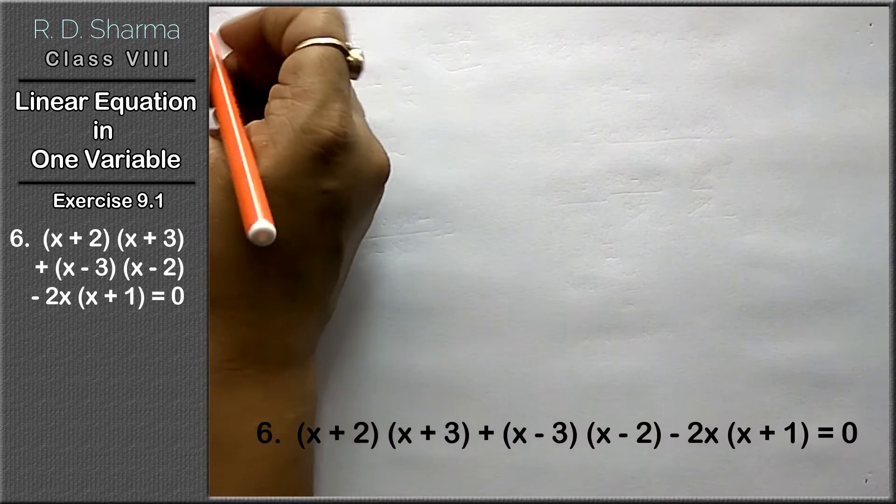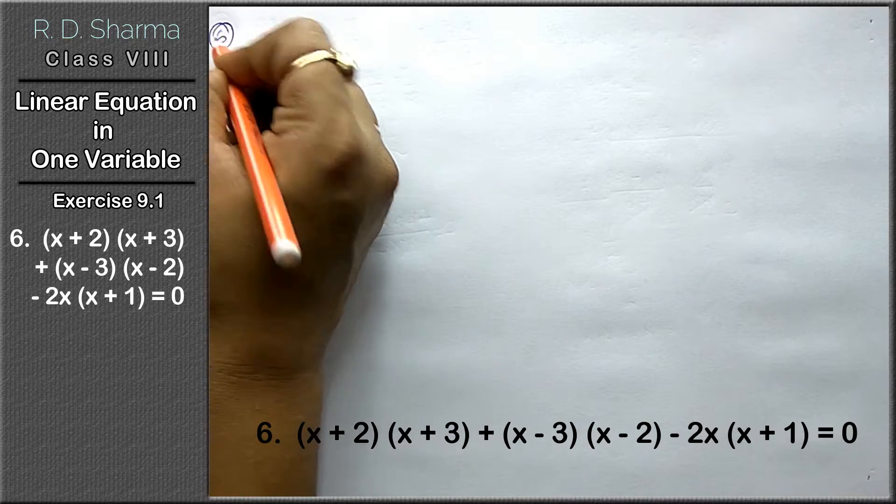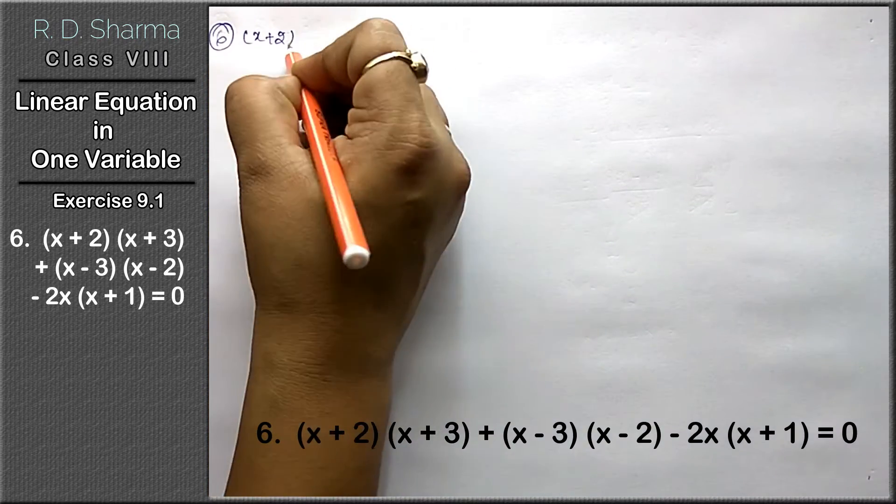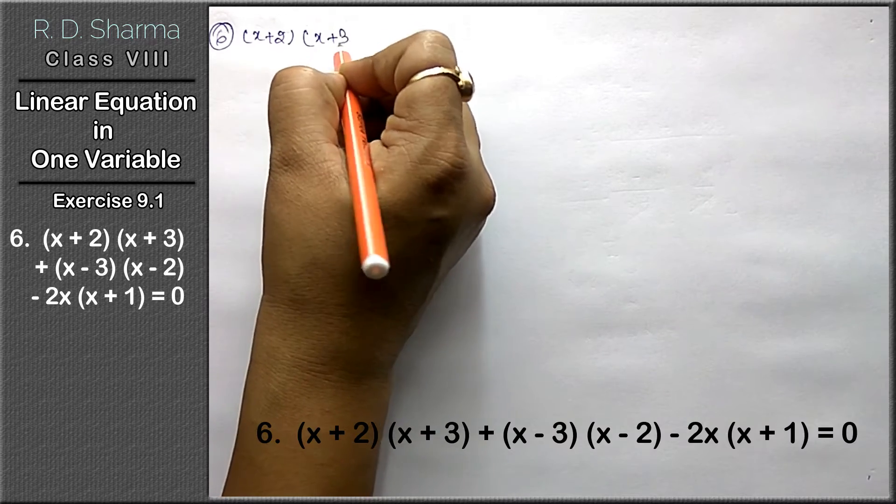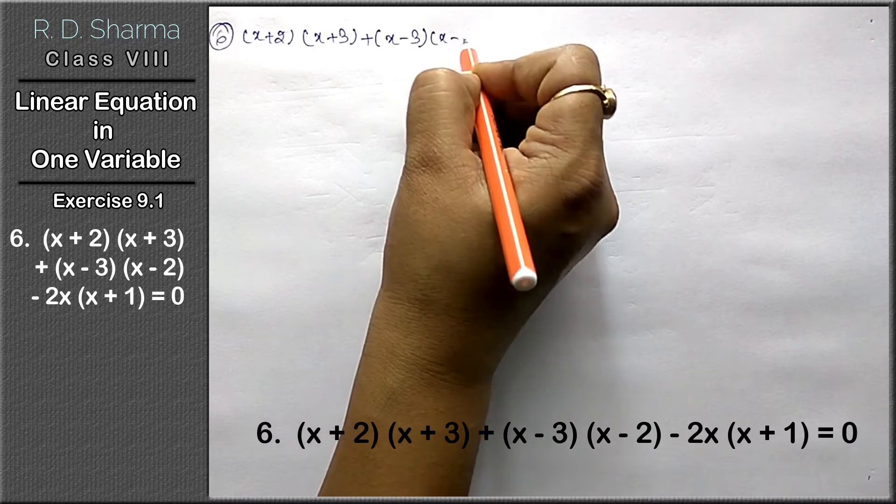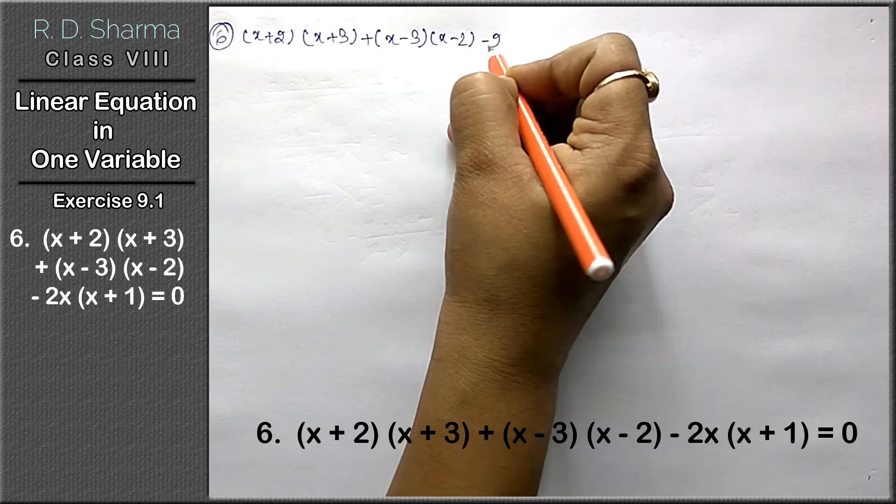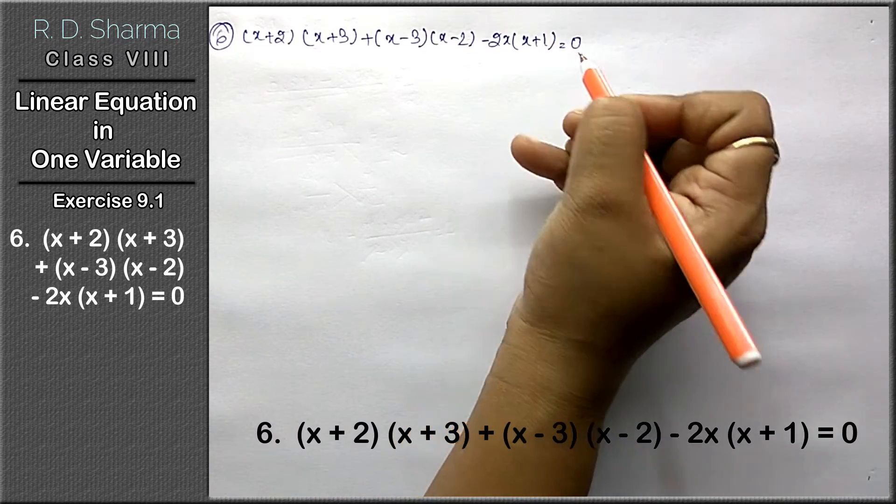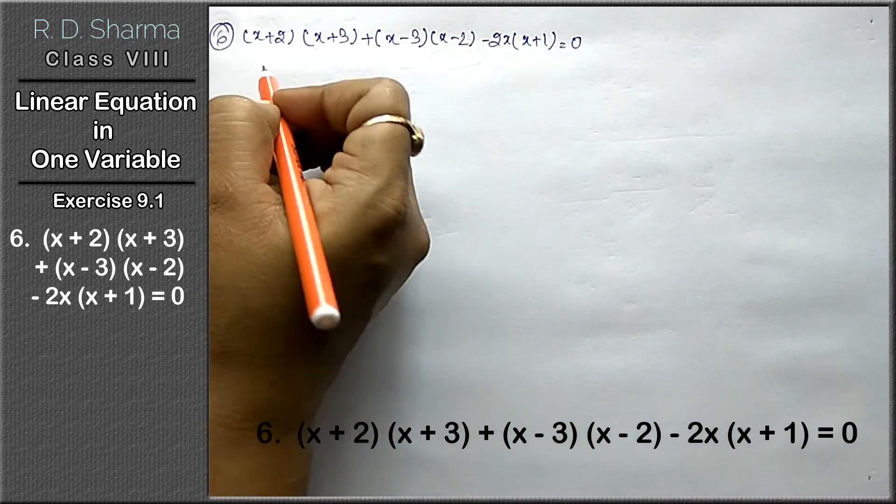Question number 6: (x + 2)(x + 3) + (x - 3)(x - 2) - 2x(x + 1) = 0. Now we will open the brackets.